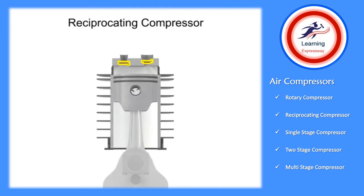There are two valves at the head of the cylinder: an inlet and an outlet. The inlet, sometimes called the suction valve, allows atmospheric air to enter the cylinder. The outlet, sometimes called the discharge valve, ejects the newly compressed air from the cylinder.